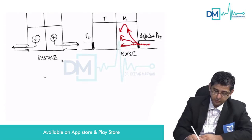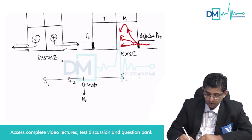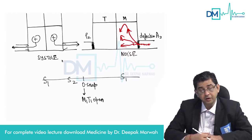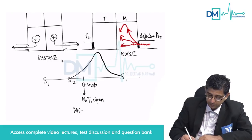When you auscultate this patient, you will notice the murmur will not begin from the opening snap, because the opening snap is when the mitral and tricuspid valves open. The problem is not in the mitral valve. The murmur will begin from S2, peak in the middle of diastole, and then gradually the pressure will come down — making this a mid-diastolic murmur.